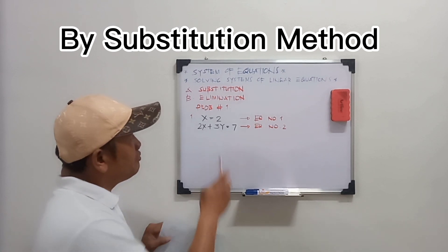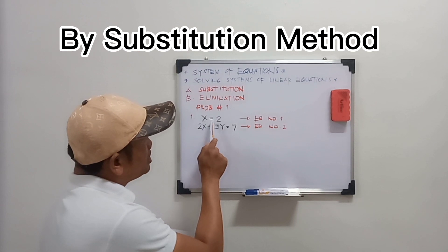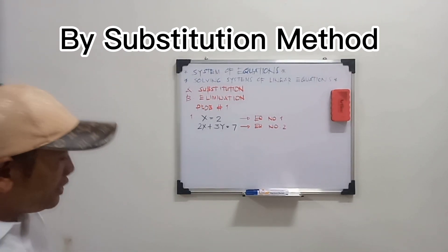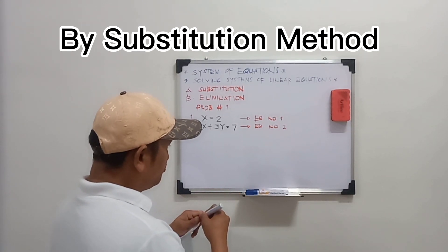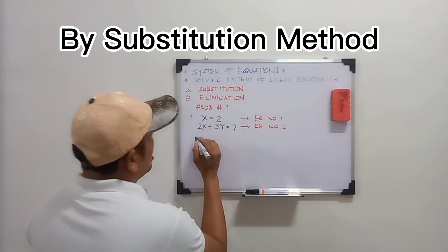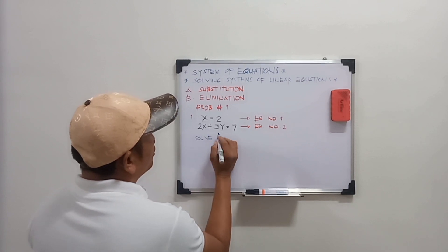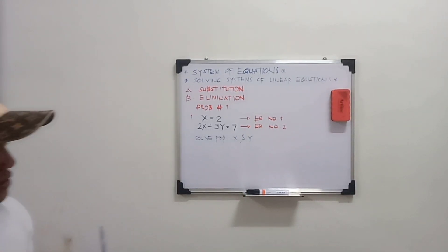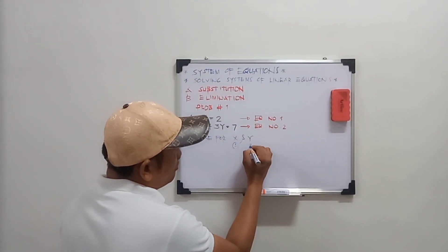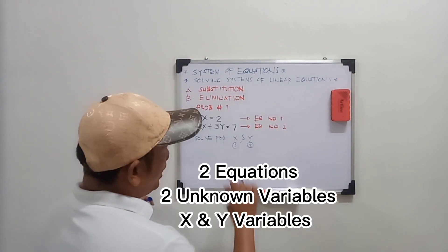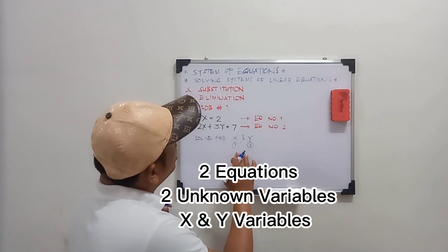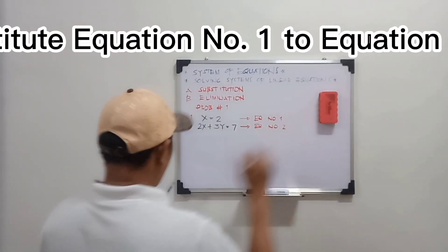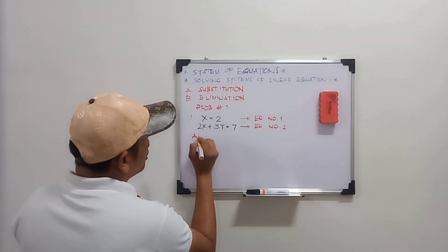So here you have problem number one. Equation number one: x equals to 2. And equation number two: 2x plus 3y equals to 7. So how many unknowns? We have two unknowns and two equations, so meaning it is solvable. So, letter A: using substitution.